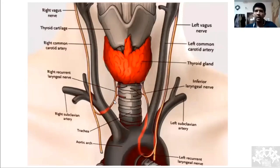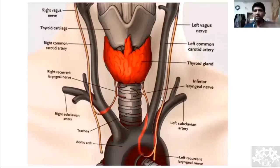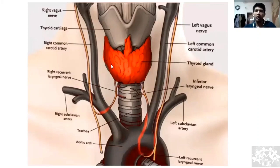Apart from that, the right recurrent laryngeal nerve runs behind the inferior thyroid artery or between its branches, while the left runs anterior to the artery. When the nerve runs between the branches of the inferior thyroid artery, sometimes during surgery you might inadvertently ligate the entire inferior thyroid artery branch together with the nerve, causing damage.